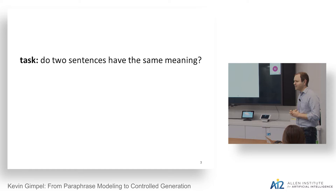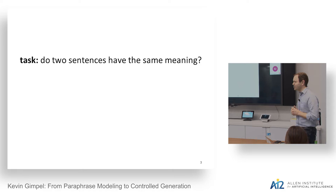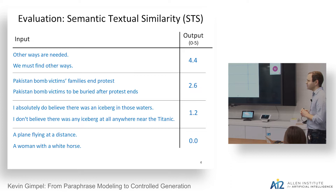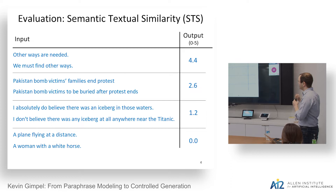One way to think about the value of this task: semantics is hard, there's a lot of work on developing representations for sentence semantics. Rather than thinking about what that should look like and how to annotate sentences for it, maybe we can push the problem into how people annotate similarity of sentences. We focused on the SemEval Semantic Textual Similarity (STS) tasks. The annotation by humans gives a similarity score from zero to five given a pair of sentences.